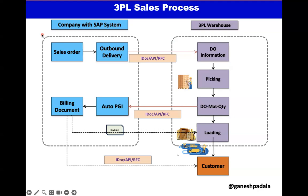Process-wise: the customer sends a purchase order to the company. Based on that purchase order, the sales team creates a sales order, inputting the customer reference details — purchase order number, material, quantity, and all information. The sales orders are then converted to outbound delivery based on the plan — immediately once the sales order is created, or based on weekly, monthly, or daily plans. Outbound delivery carries the material and quantity.